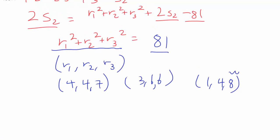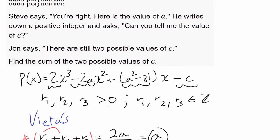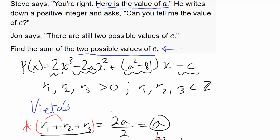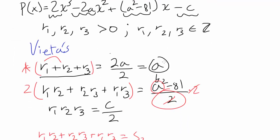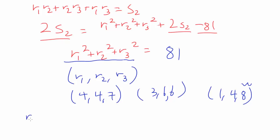We have these three, and what do we know? We want to find the values of c, the two possible values of c. And to start with, Steve is going to give him a value of a, and there has to be two possible values of c. We know a = r₁ + r₂ + r₃. So let's try to evaluate r₁ + r₂ + r₃ added together. In this case, 4 + 4 + 7 is 15. For this one, 3 + 6 + 6 is also 15. And for this one, it's 13.